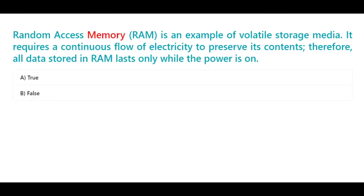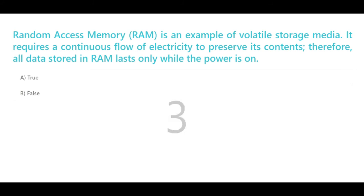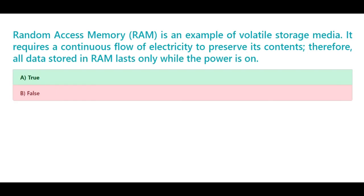Random access memory (RAM) is an example of volatile storage media. It requires a continuous flow of electricity to preserve its contents; therefore, all data stored in RAM lasts only while the power is on. A. True. B. False. The correct answer is A. True.